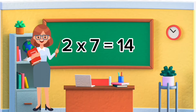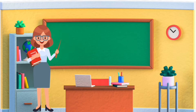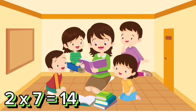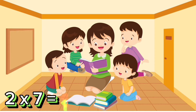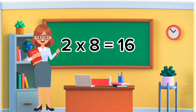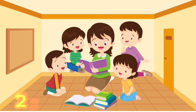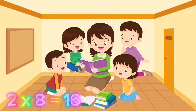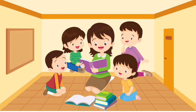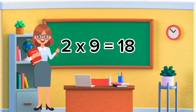Two sevens are fourteen. Two eights are sixteen. Two nines are eighteen.